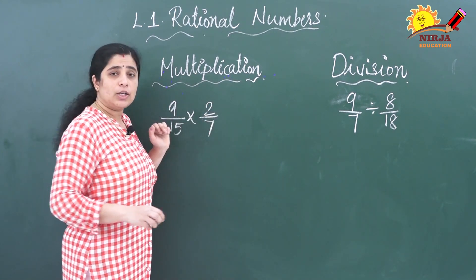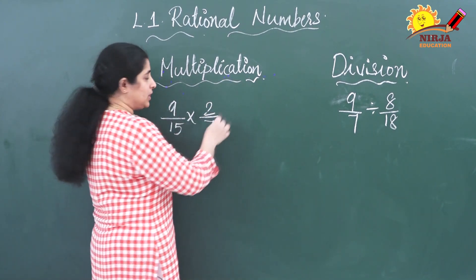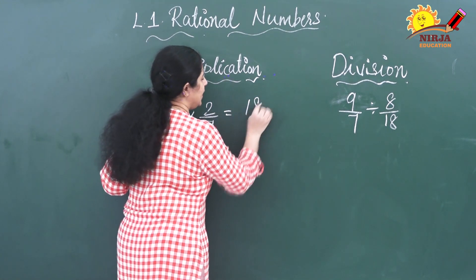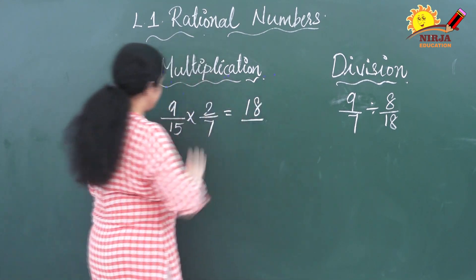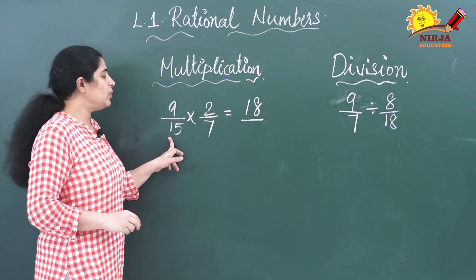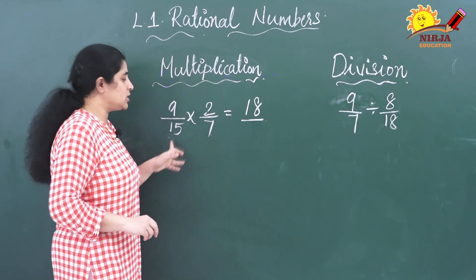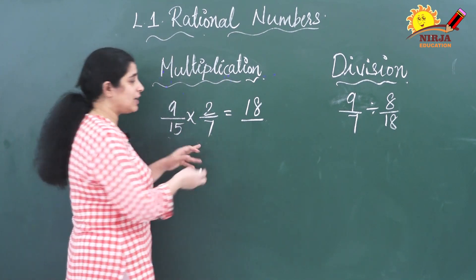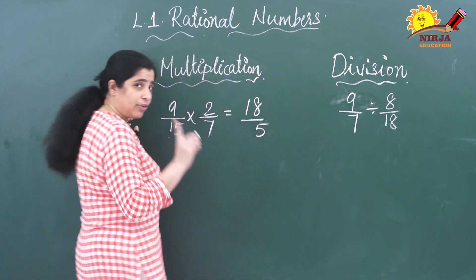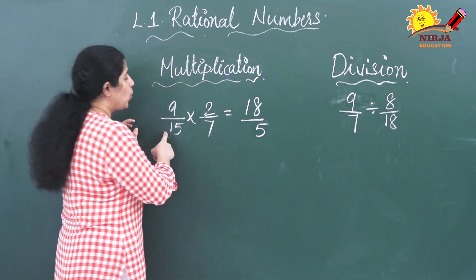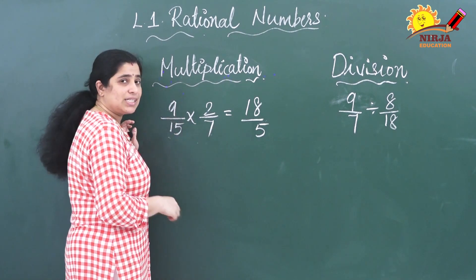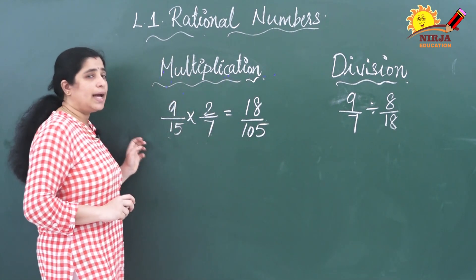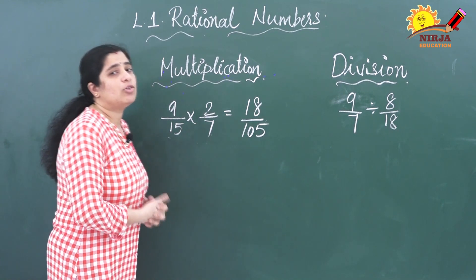Now we will multiply the numerator with the numerator: 9 twos are 18. Now we will multiply the denominators: 15 multiplied by 7. 5 sevens are 35, and 1 seven is 7, plus 3 gives 10 — so you will get 105.